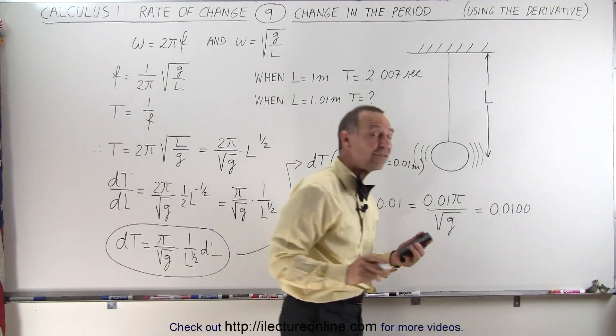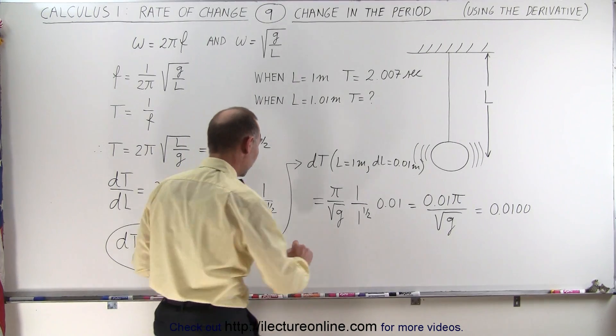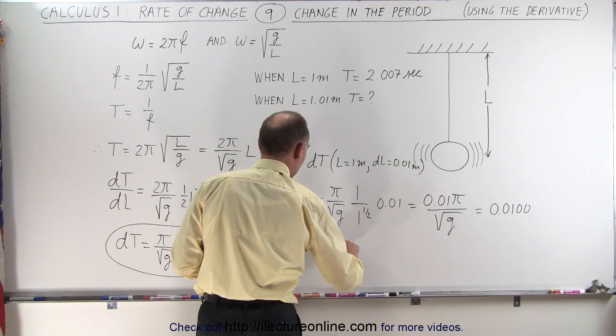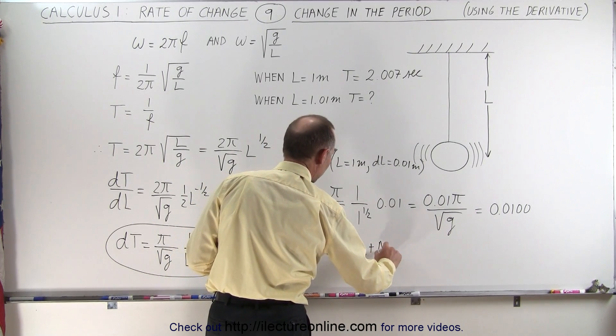So 1/100 of a second. So the period will increase by 1/100 of a second. So the new period, the new T, is going to be equal to the original T plus the change in the T. So the change here is the differential, it's how much the period is changing.